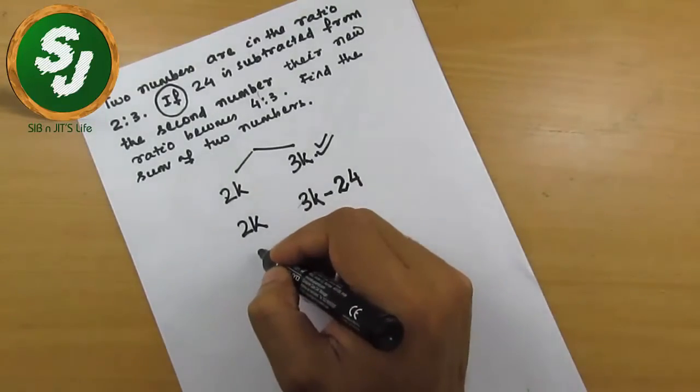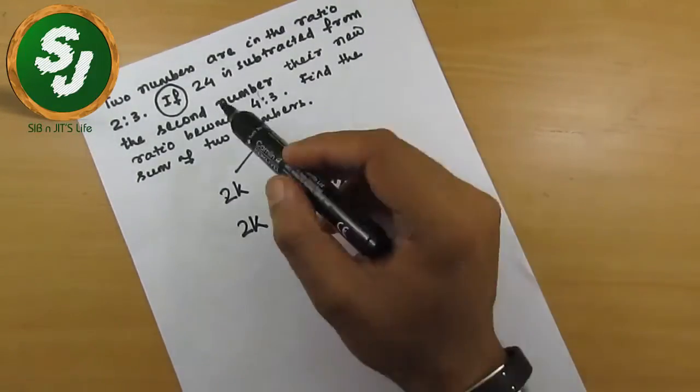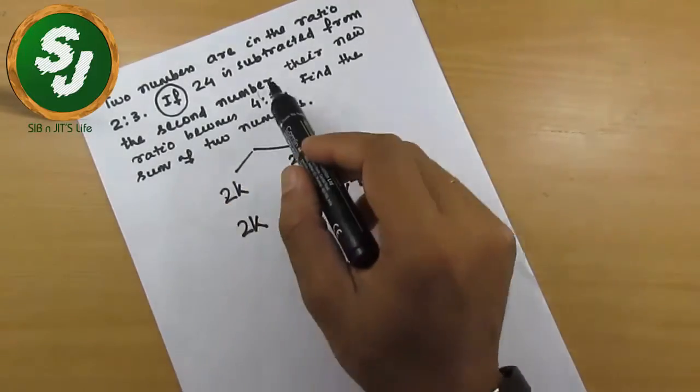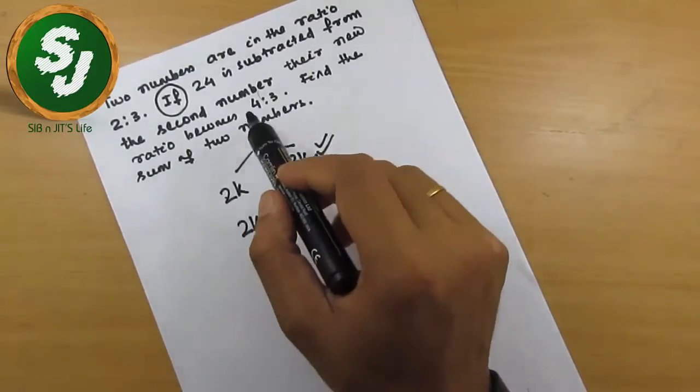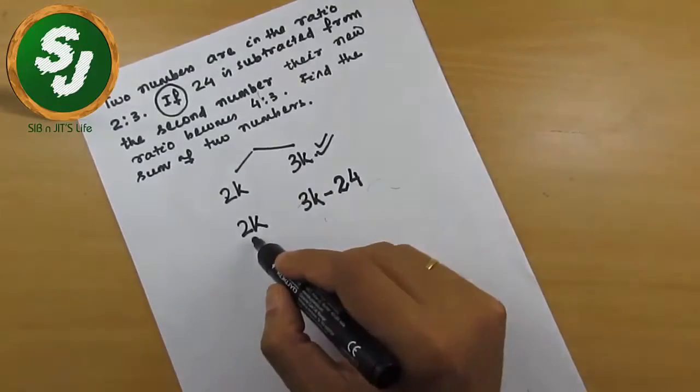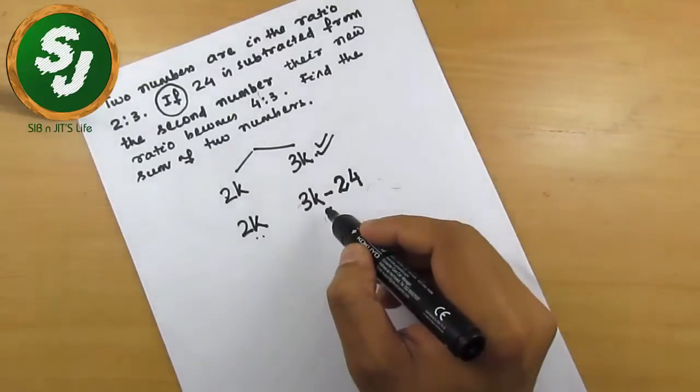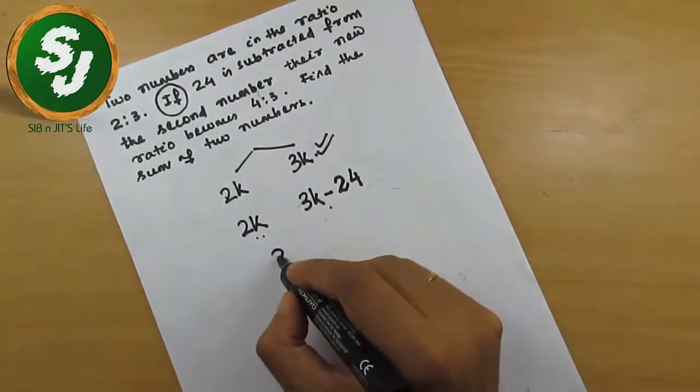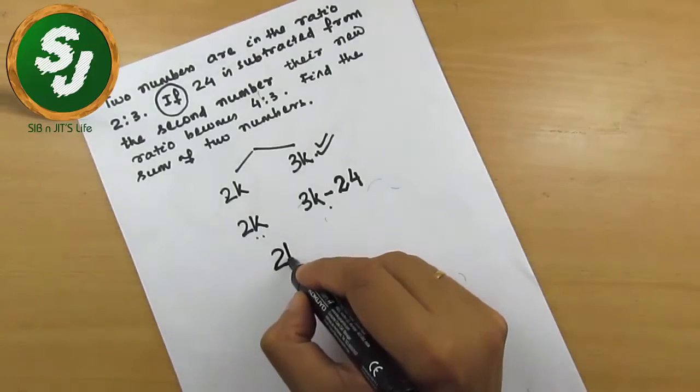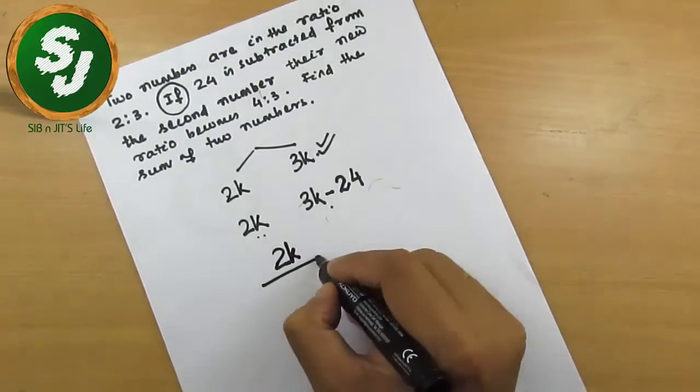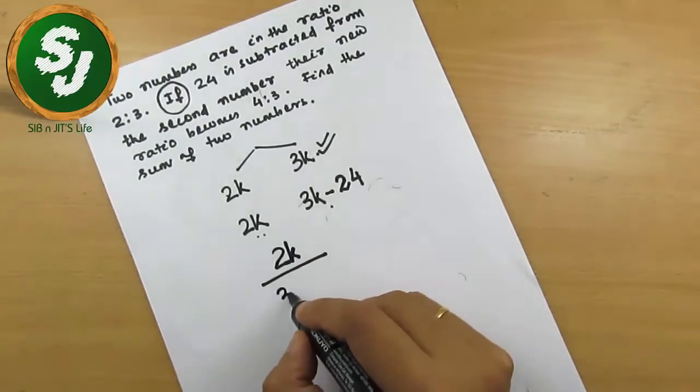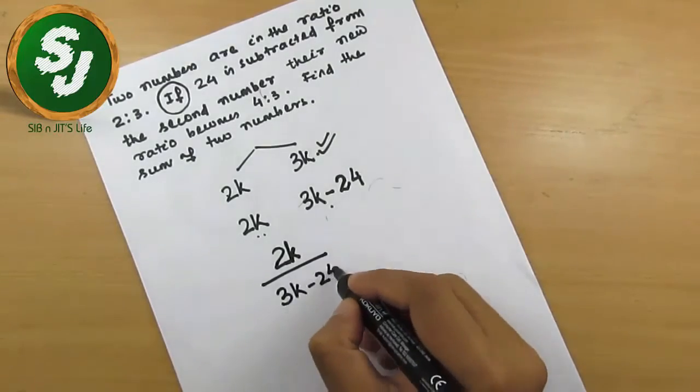becomes the new number. 2k remains the same. The question says that if 24 is subtracted from the second number, their new ratio becomes 4 is to 3. It means that the ratio of these two numbers becomes 4 by 3. So let me write in this way of forming an equation. The ratio is 2k by 3k minus 24. 2k